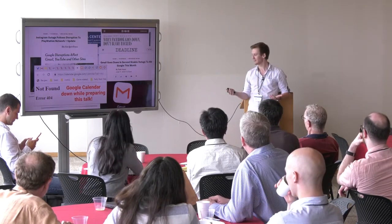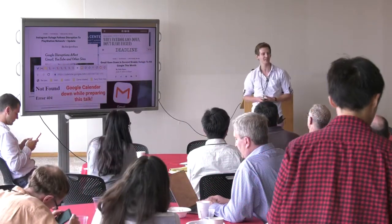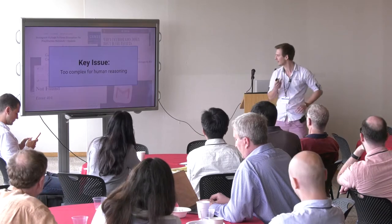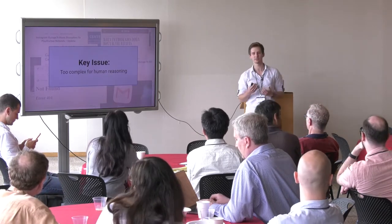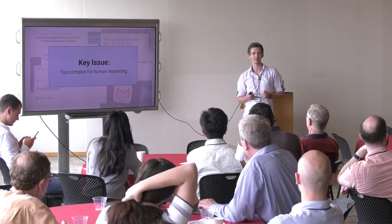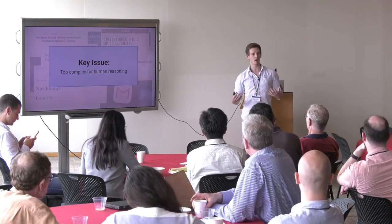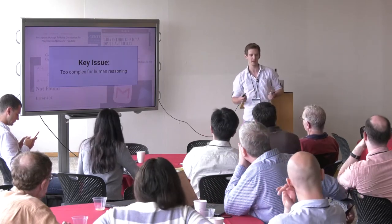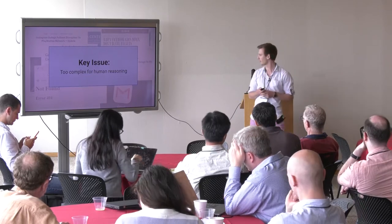You might be wondering: why is it that these big tech companies don't have their networks under control? Clearly there seems to be a problem here. The key issue is that networks have just become so large and so complex that it's basically impossible or infeasible for a human to rule out all the possible cases and rule out that a configuration change might cause some unforeseen consequences.